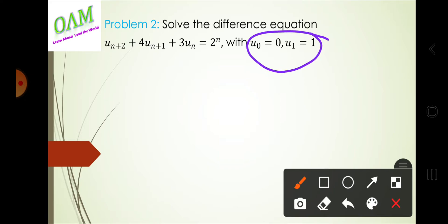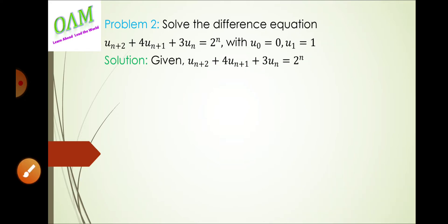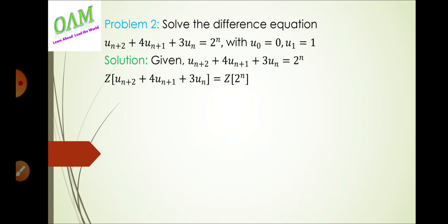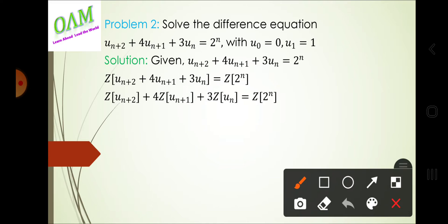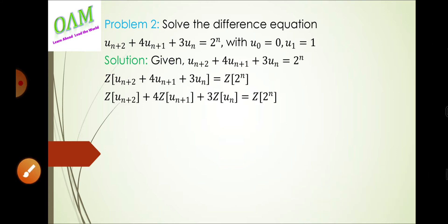These are the two initial conditions we need to solve. Given the difference equation, in the next step we take the Z-transform on both sides. Using the linearity property, we can take the Z-transform term by term: Z{u(n+2)} + 4·Z{u(n+1)} + 3·Z{u(n)} = Z{2^n}.